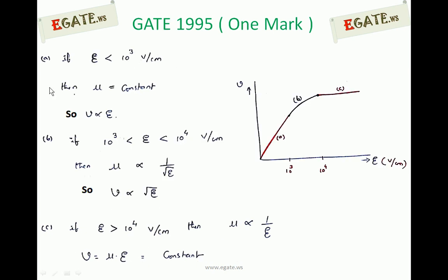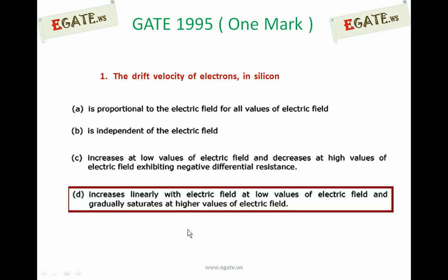To summarize these three effects: for small electric fields below 10³, velocity increases linearly; for electric fields between 10³ and 10⁴, velocity increases but proportional to the square root of electric field, so the increment reduces; and for electric fields greater than 10⁴, velocity becomes constant — the velocity saturation region. Therefore, drift velocity of electrons in Silicon increases linearly with electric field at low values and gradually saturates at higher values.